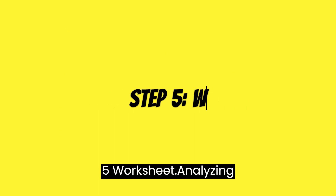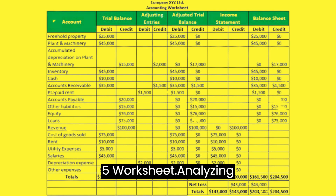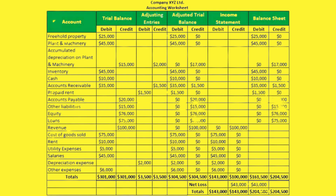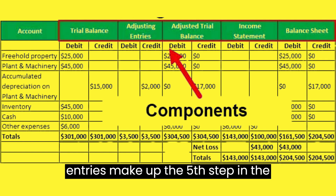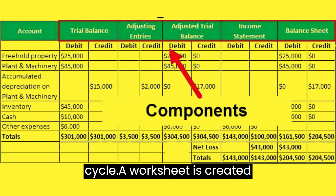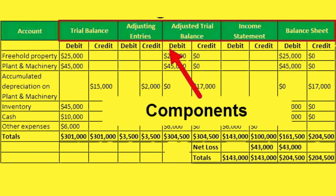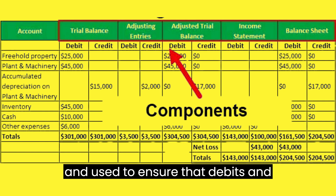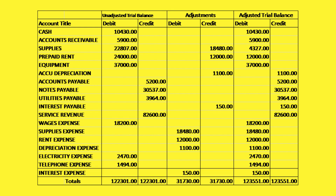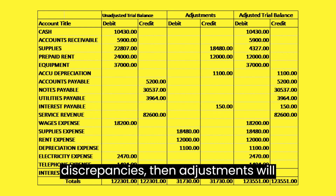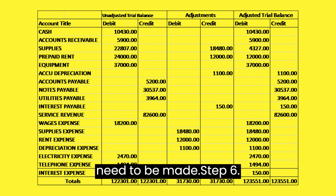Step 5: Worksheet. Analyzing a worksheet and identifying adjusting entries make up the fifth step in the cycle. A worksheet is created and used to ensure that debits and credits are equal. If there are discrepancies, then adjustments will need to be made.